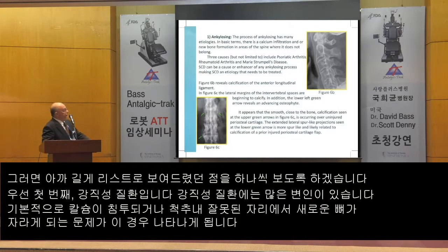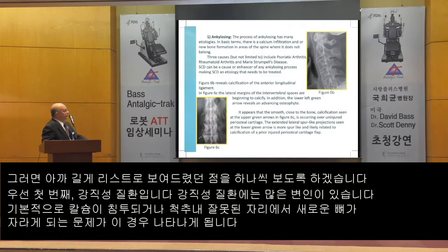Ankylosing. The process of ankylosing has many etiologies. In basic terms, there is a calcium infiltration and/or new bone formation in areas of the spine where it does not belong.